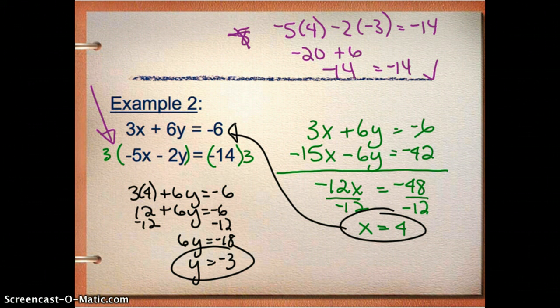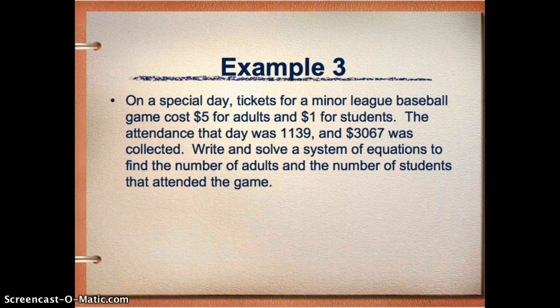Let's do a word problem because, of course, they always show up and they're everyone's favorite. So, on a special day, tickets for a minor league baseball game cost $5 for adults and $1 for students. The attendance that day was 1,139 and $3,067 was collected. So I want you to try to write and solve a system of equations to find the number of adults and the number of students that attended the game.